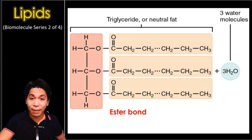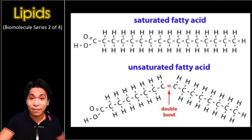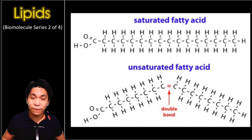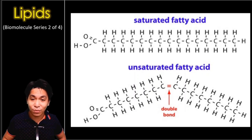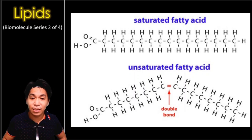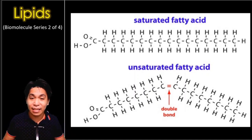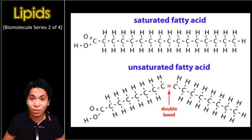The property of a triglyceride depends on the fatty acids attached to it. Fatty acids can be in a saturated or unsaturated form. A saturated fatty acid is composed of single bonds between carbon atoms, giving a straight chain. An unsaturated fatty acid has a double bond, which creates a kink or bend. More double bonds means more bends; fewer double bonds means fewer bends.